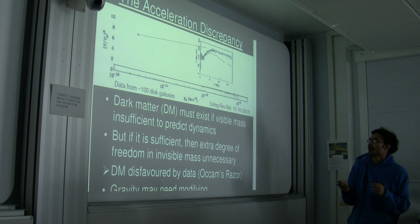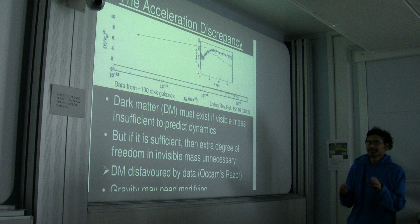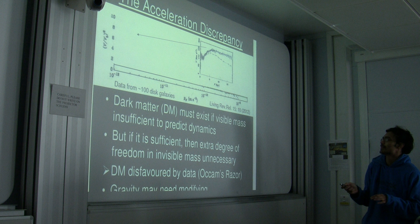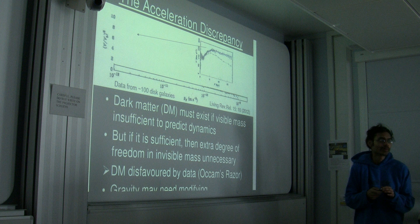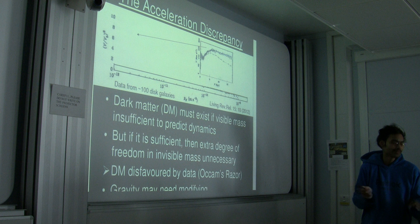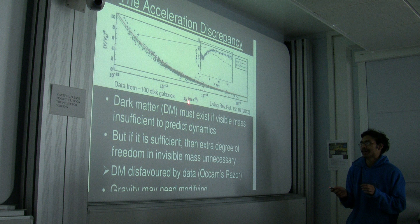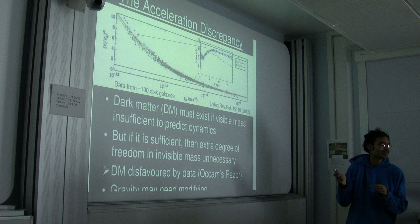But if you can predict motions from the visible mass, then you don't actually need dark matter. In fact, the data would be favored in that case, because you don't need extra freedom. But of course, if the rules for going from the visible mass to the motions was not Newtonian gravity, then you might need a different theory of gravity. I'll show you data for about 100 rotating disk galaxies. What we plotted is the force divided by the force you expect from Newtonian gravity, and on this axis is the gravitational acceleration.